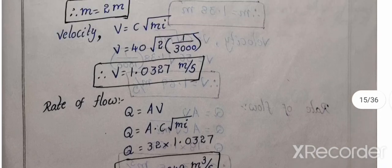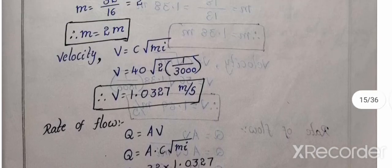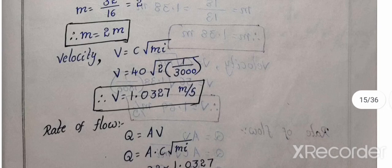So this will be velocity calculation. Okay, clear. So this will be velocity, rate of flow, slope.